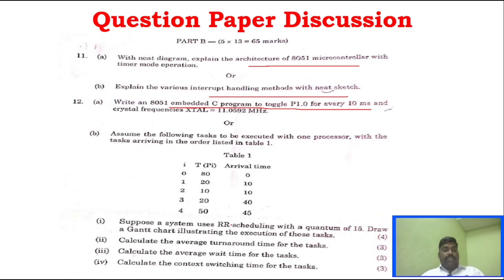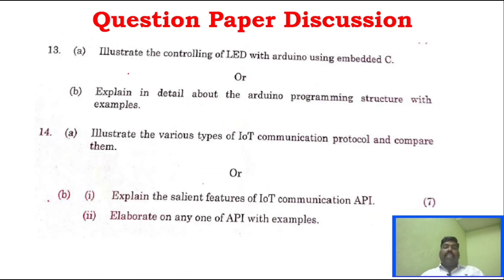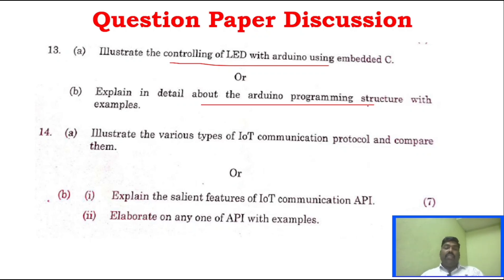RR Scheduling is an important problem for Part B. The third question is controlling of LED with Arduino. Similarly, Arduino programming structure with an example. Unit 4 covers IoT communication protocols and IoT communication API — elaborate on any one API.